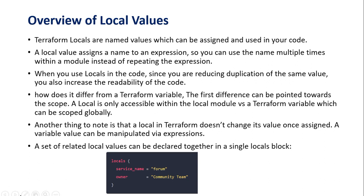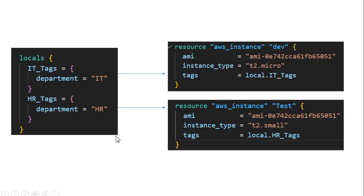That's how we define a locals block. To understand with an example: suppose I have created a locals block and one tag — key is 'department', value is 'IT'. So 'department' is the key and 'IT' is the value.